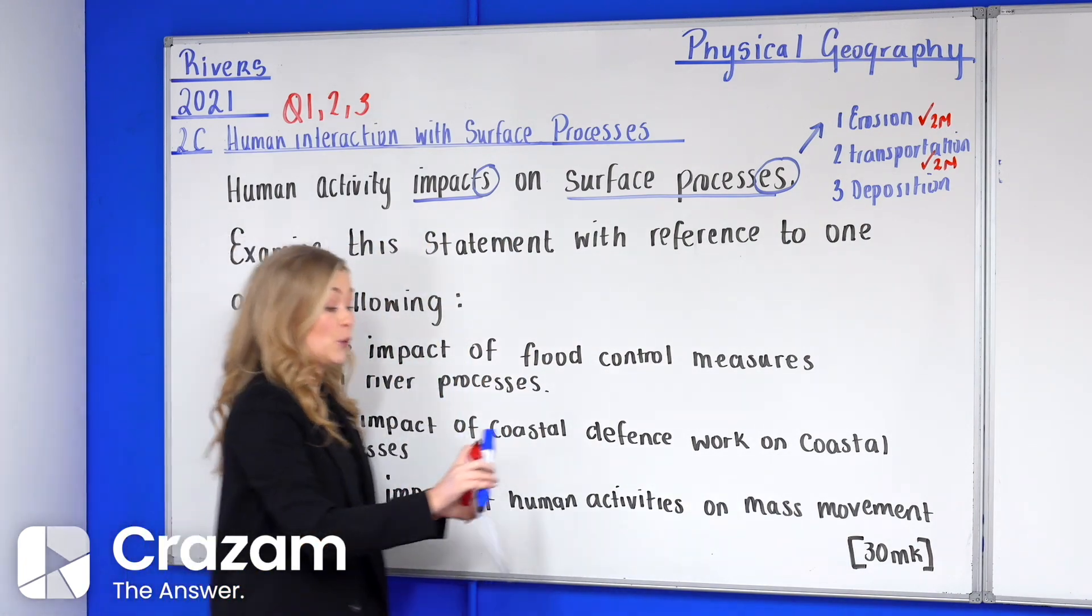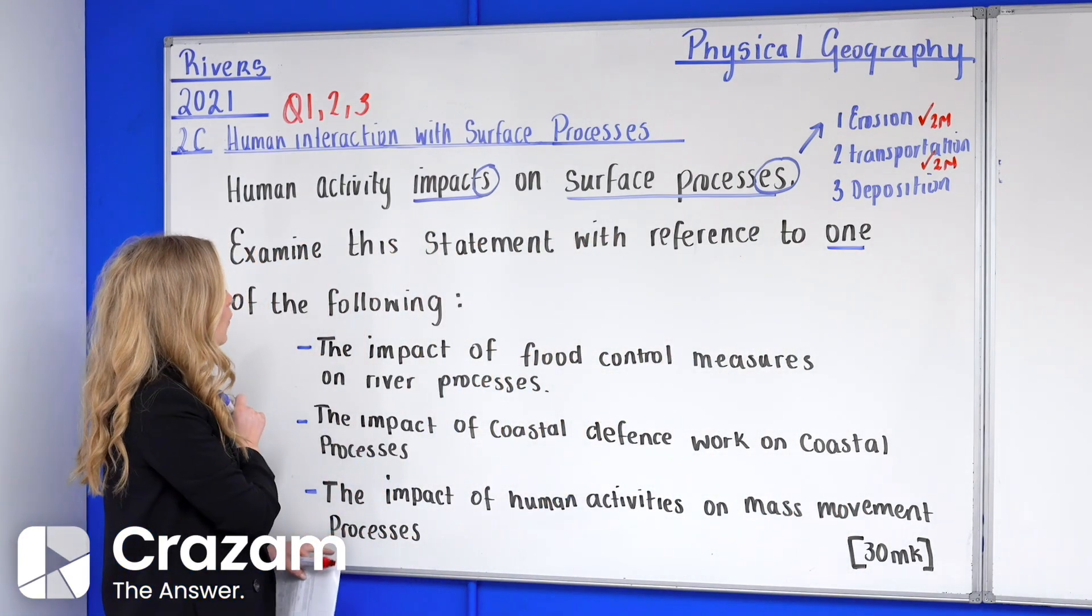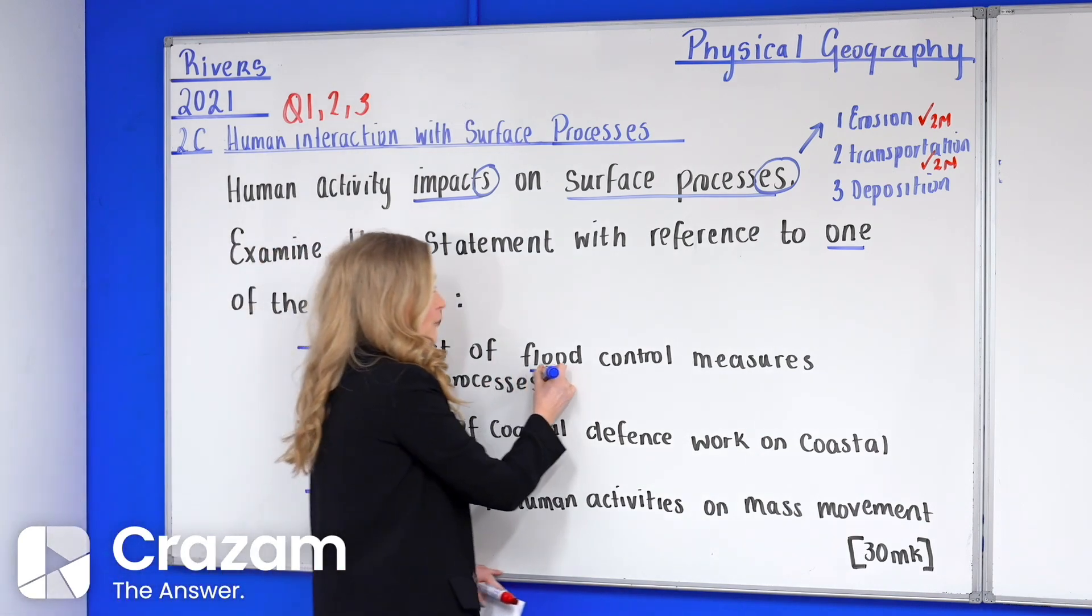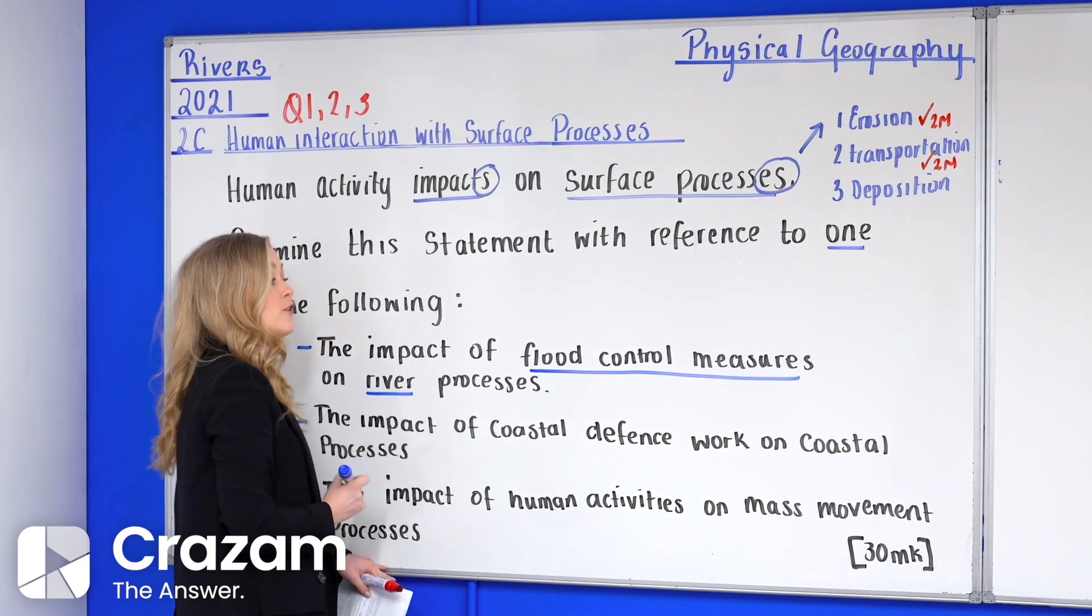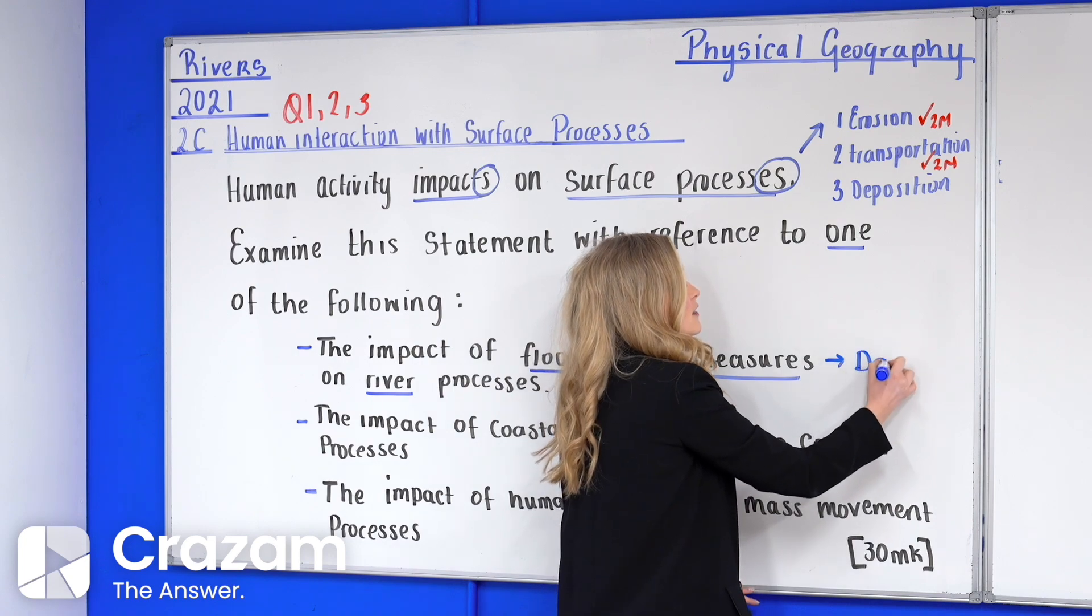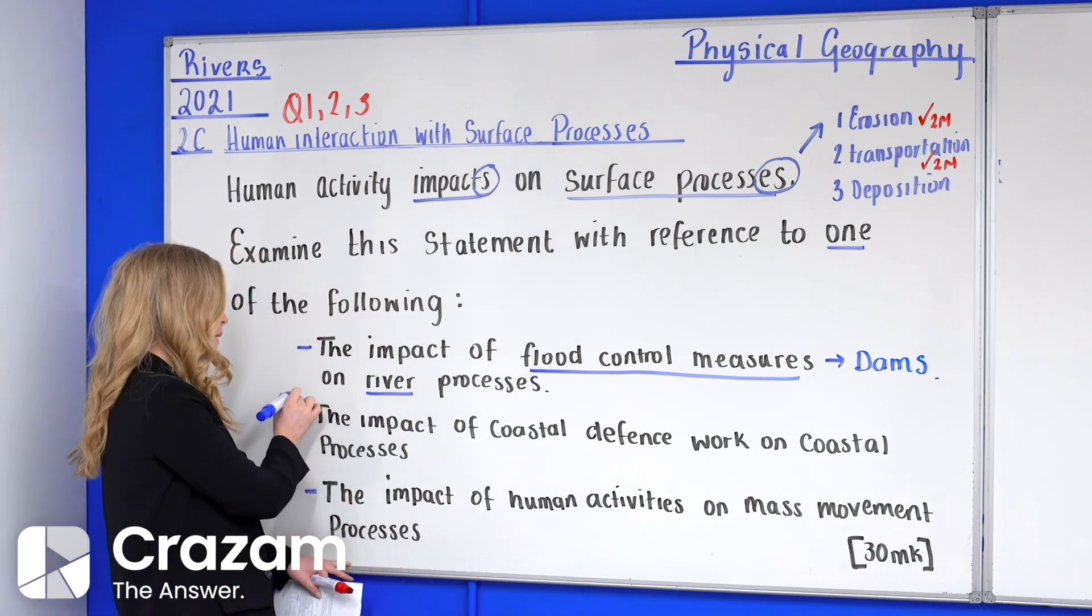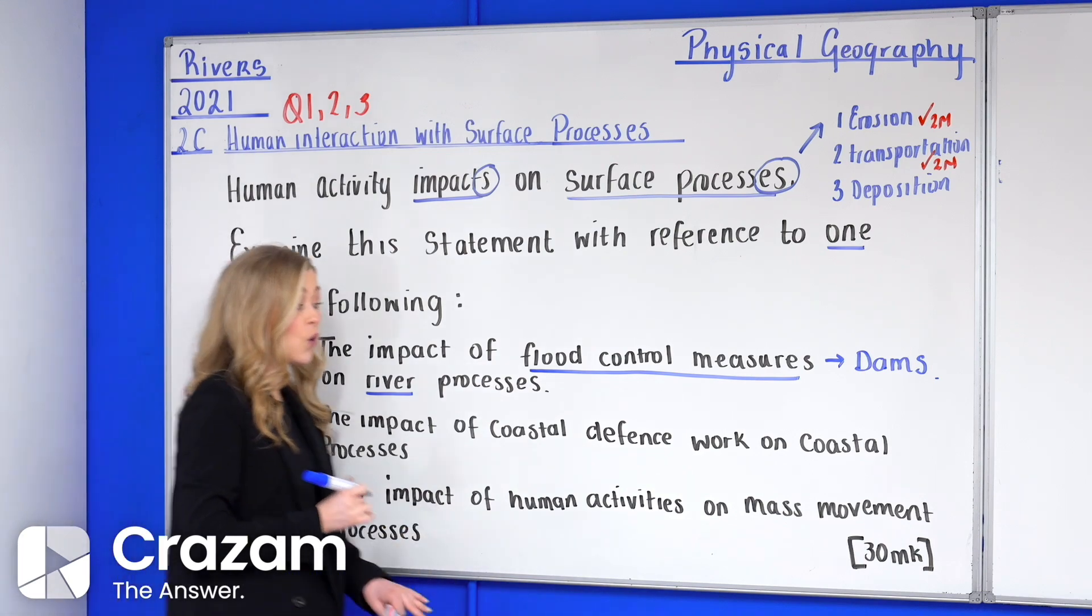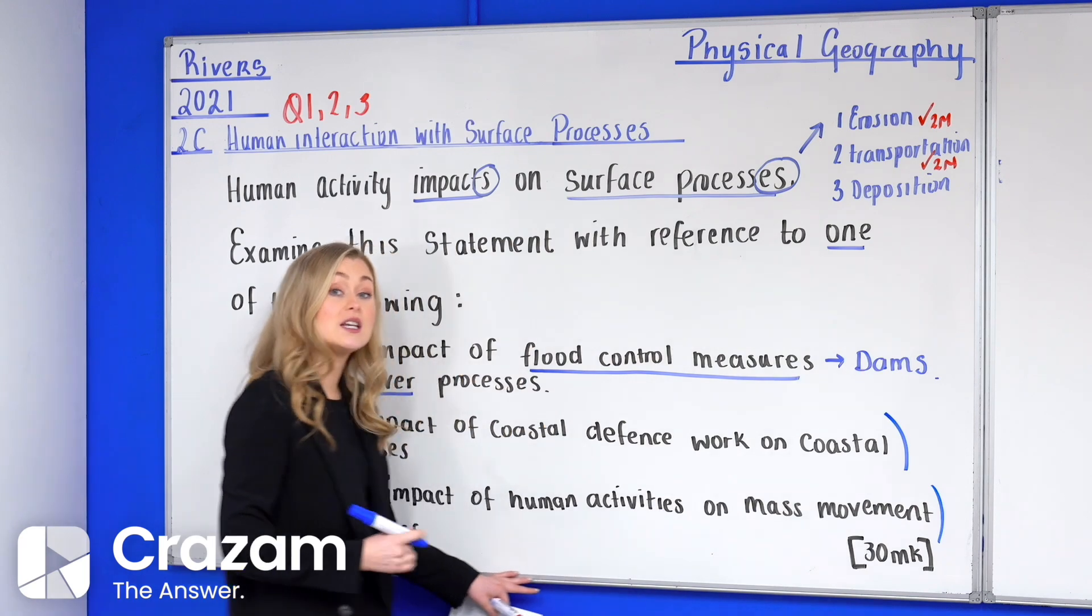Examine the statement with reference to one of the following so just one of these. The impact of flood control measures on the river processes. Now flood control measures on the river processes is looking at the construction of dams. That's what we're going to be taking a look at today. We're not going to be having a look at the second or the third, the impact of coastal defences or the impact on mass movement. So we only need to study one of these.